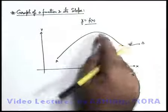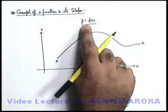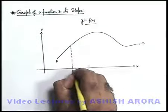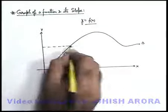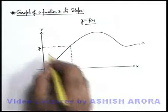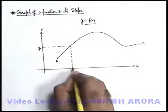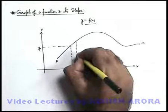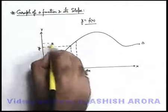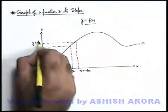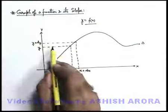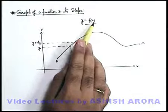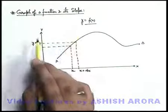This curve we simply call as curve or graph of this function y is equal to f of x. In this curve, for a particular value of x, we get a value of y. If we change the value of x, y will also change. Say if we change x slightly to x plus dx. At this value, corresponding value of y will be y plus dy. This we have already studied at the time of discussion on differentiation, that on changing value of x slightly we get slight change in value of y, that is dy.